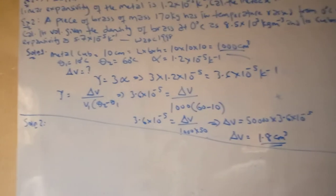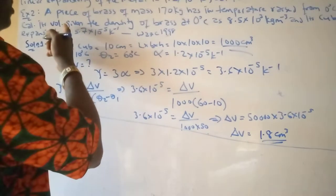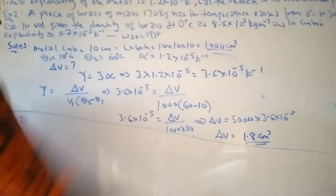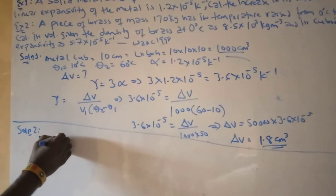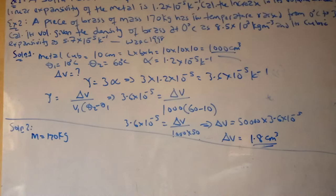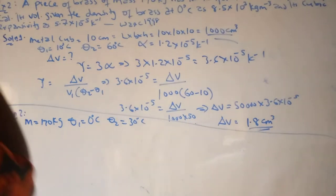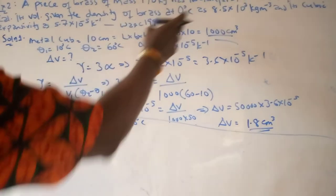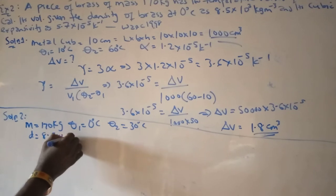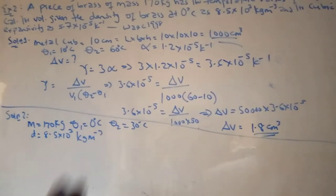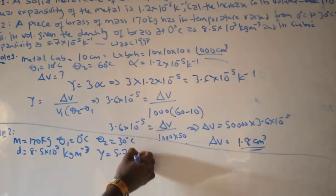Solution 2 says: a piece of brass of mass 170 kg has its temperature raised from 0 to 30 degrees centigrade. Calculate its volume given the density of brass at 0°C. So mass is 170 kg, θ₁ is 0, θ₂ is 30 degrees centigrade. The density given is 8.5 × 10³ kg per meter cube.